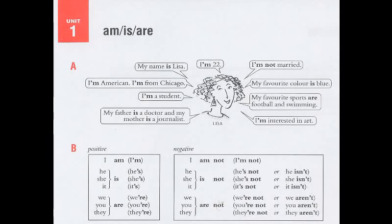B. Positive forms: I am. He is. She is. It is. We are. You are. They are. Short forms: I'm. He's. She's. It's. We're. You're. They're.